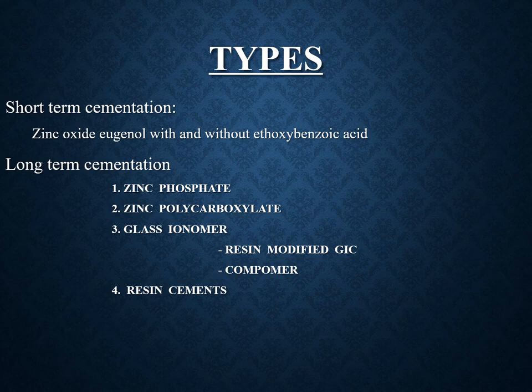Coming to the types, we can divide broadly into short-term cements and long-term cements. In short-term cements there is zinc oxide eugenol, with and without ethoxy benzoic acid. Long-term cements consist of zinc phosphate, zinc polycarboxylate, glass ionomer — which can be divided into resin modified GIC and compomers — and then resins.